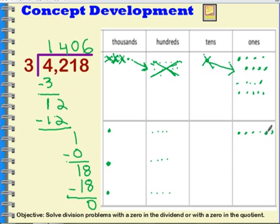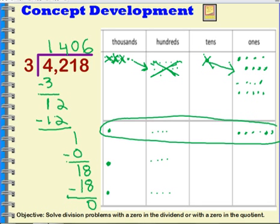So this group right here has in it one thousand, four hundreds, zero tens, and six ones, which is the same as my quotient here, one thousand, four hundred six.